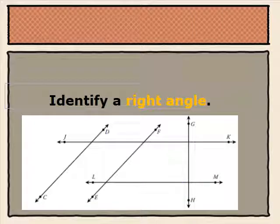What are some other right angles in the diagram below? At the intersection of line JK and line GH, we have another right angle. We know it's a right angle because it gives us a 90 degree angle or a square corner.